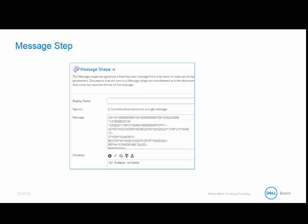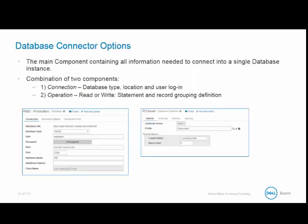As we've learned in our Boomi Essentials class, AtomSphere development is completed from the endpoints first, focusing on the connectors. We are writing our data to a MySQL database, so let's quickly review the core database connector options. It is the main component containing all the information needed to connect with a single database instance, and like many of our connectors, it consists of two parts: the connection, which is known as the 'where' — the database type, location, and user login — and the operation, or the 'how,' which houses the read or write statement, stored procedure call, and record groupings. Since this is completed, we will not review this shape any further.